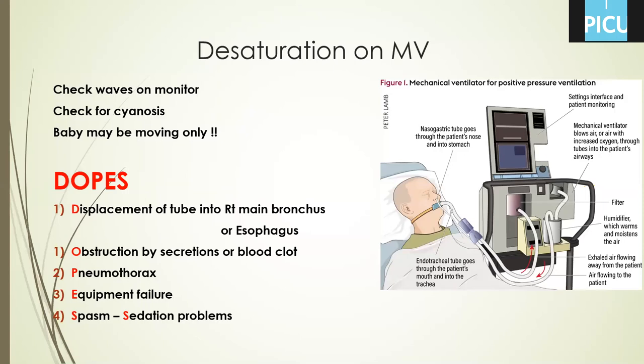Sometimes the patient may have a sedation problem — moving too much and fighting the machine. Give a bolus of sedation, for example midazolam and fentanyl, and you can increase the baseline maintenance doses or add another sedative drug. A patient with hyperactive airway or bronchial asthma may develop severe bronchospasm during care or due to chest infection — give bolus sedation and bronchodilator measures.